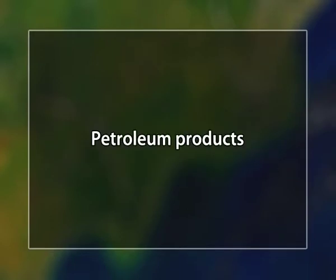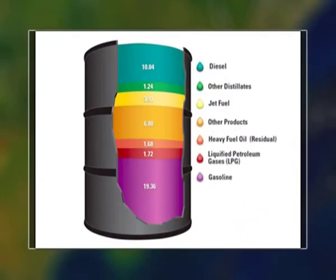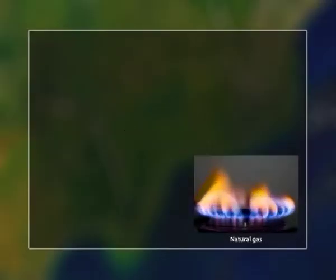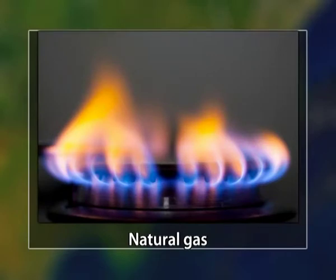A form of cogeneration is combined heat and power, which produces thermal and electric energy from a single fuel source. Petroleum products are another key energy input. Natural gas represents a significant fraction of total industrial energy consumption and is also an important raw material in industries such as chemical manufacturing and petroleum refining.